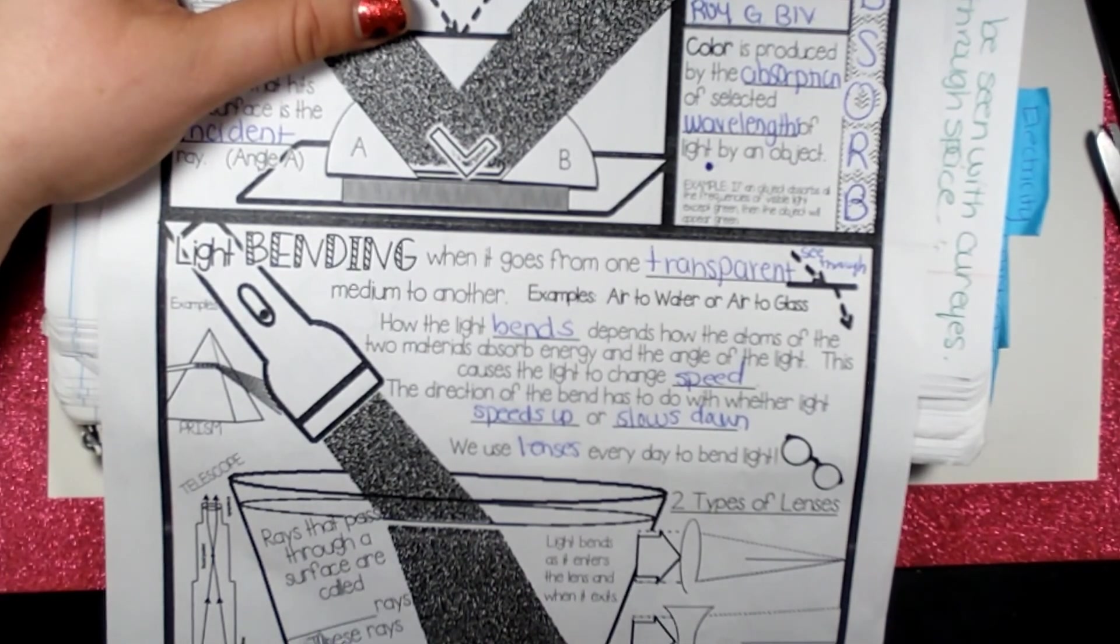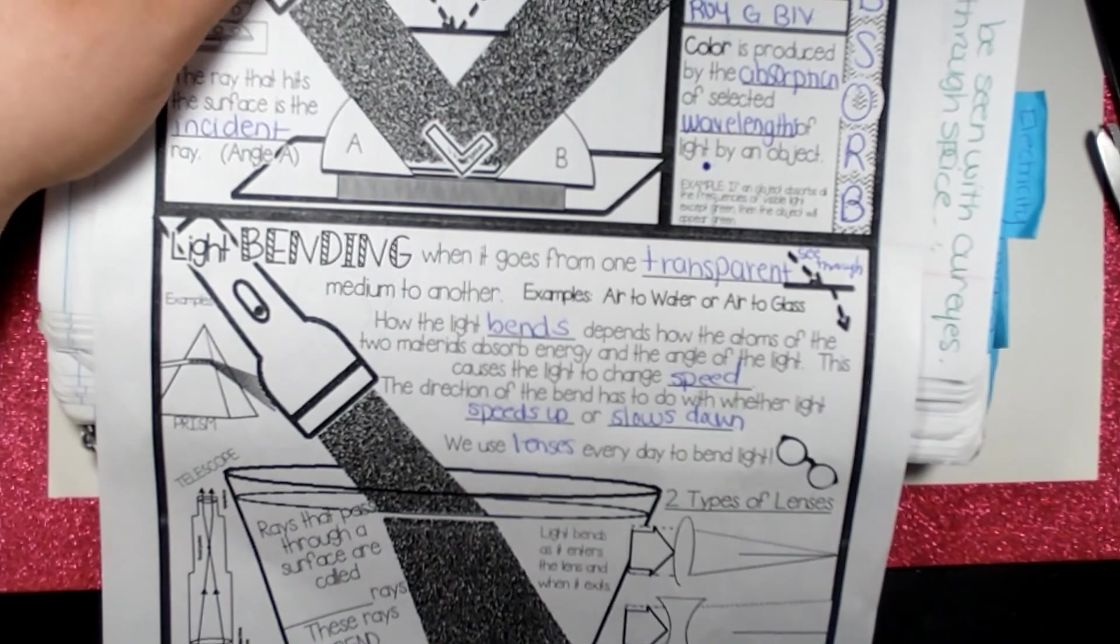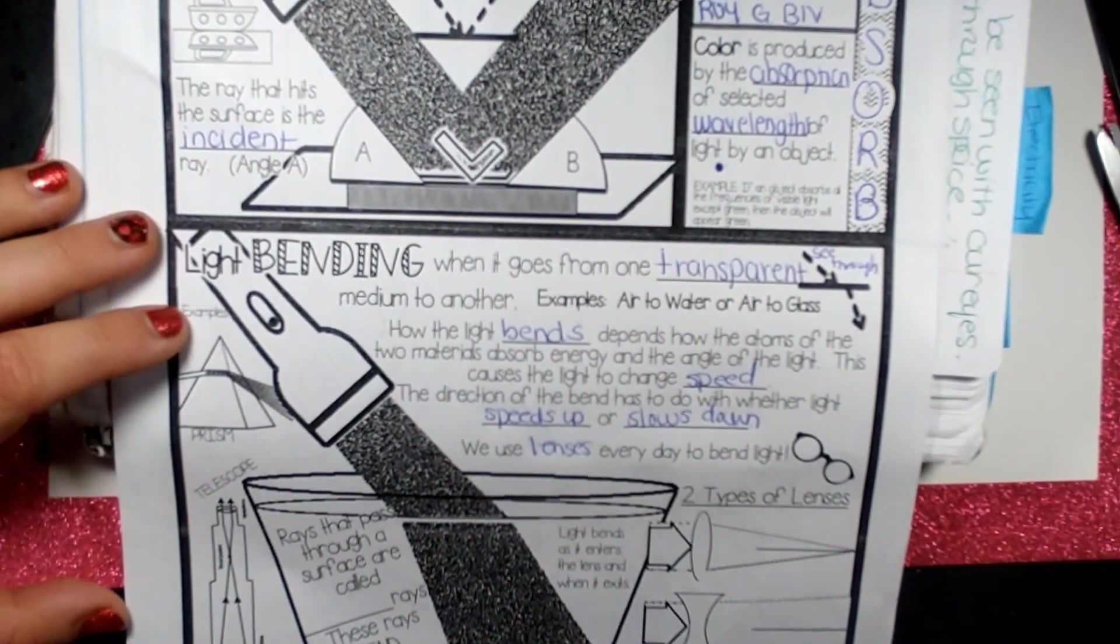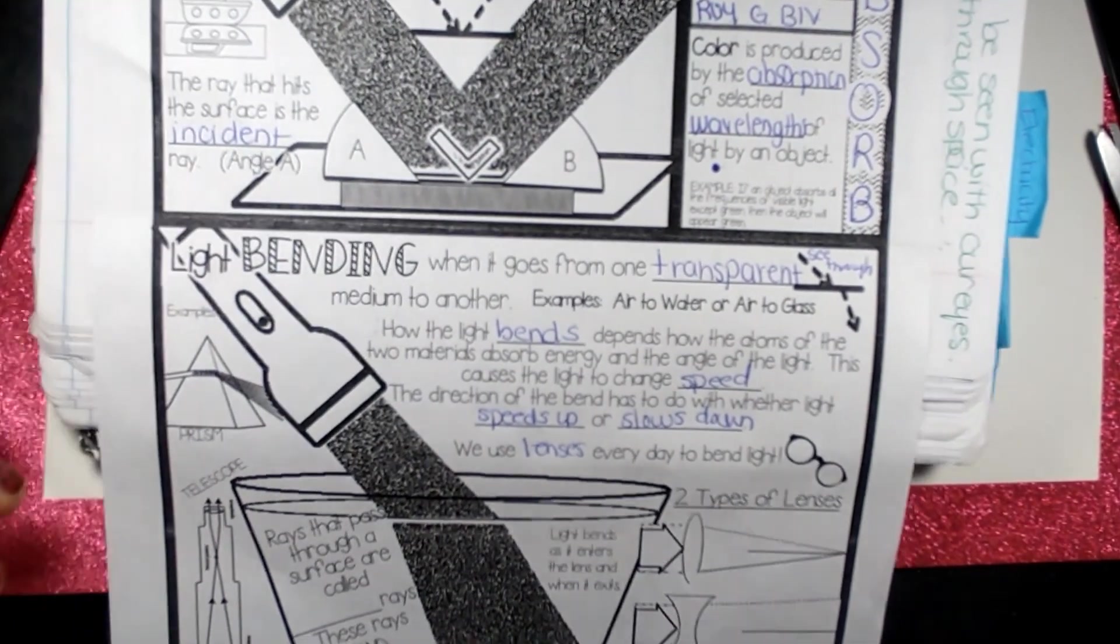Okay, and I'm not going to be talking about the telescope and the prisms and all the different types of lenses yet. We'll be doing that later on. So that is our light energy.